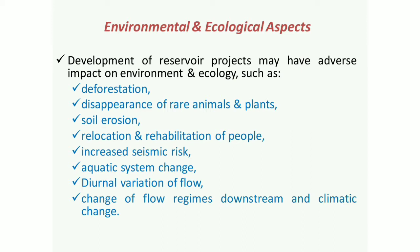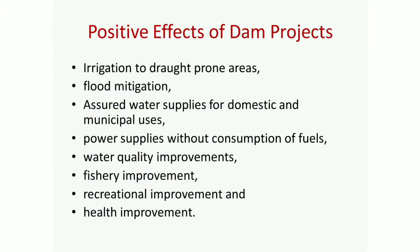Most of the negative effects can be minimized by taking proper measures, though nothing can be done for few things like blockage of animal corridors. Now, compared to negative effects, positive effects are many. These include water supply, irrigation to drought-prone areas, power generation without consumption of fuel — which is very important — navigation, fishery development, and recreation, meaning tourism development.